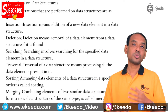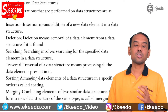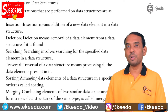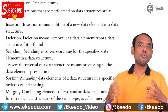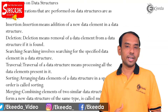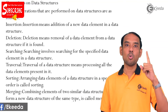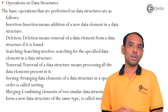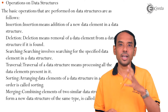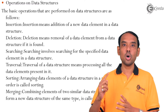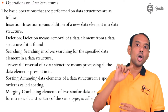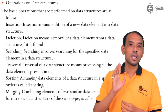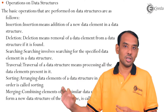Next is traversing. Traversing is basically visiting all the data elements once in a given data structure. For example, if we have 10 data items in a given data structure, visiting all 10 data items once is called traversing.